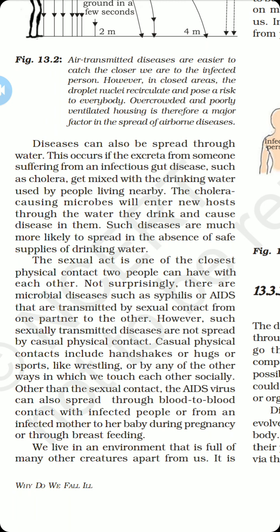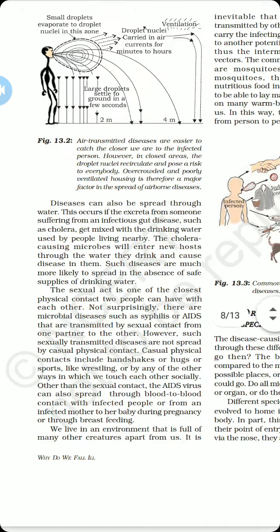Some infectious diseases also spread through sexual contact from an infected partner to a healthy partner. AIDS can also be transmitted through infected blood transfusions. It can also be transmitted to a baby from his or her mother at the time of pregnancy, or during lactation or breastfeeding.